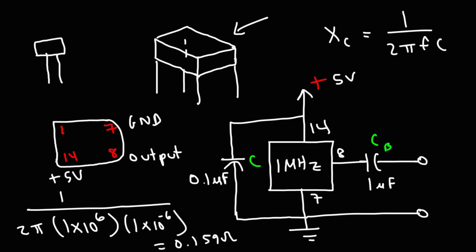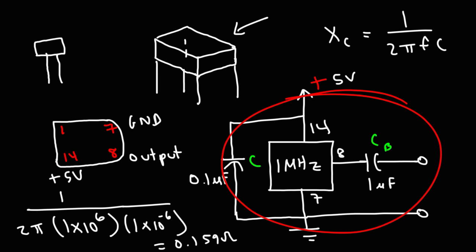So that's it for this video. Now you know how to construct the Pierce crystal oscillator circuit using a JFET, and also how to generate a simple oscillator circuit using the full-can 4-pin crystal oscillator device.